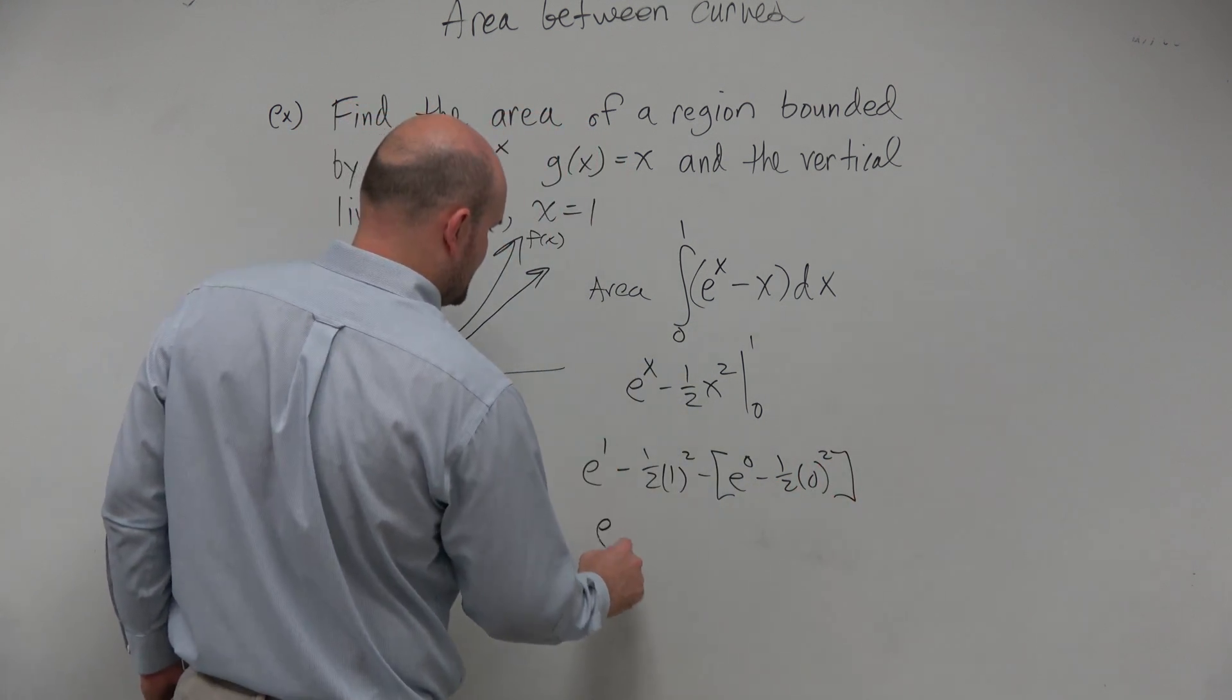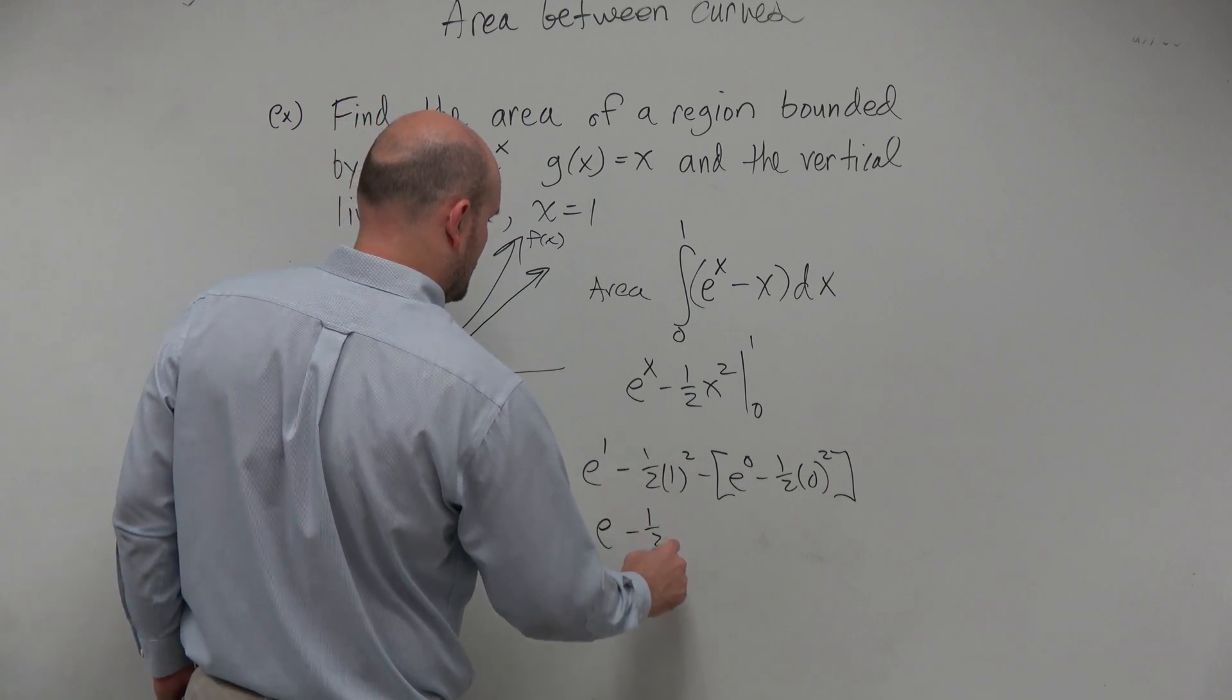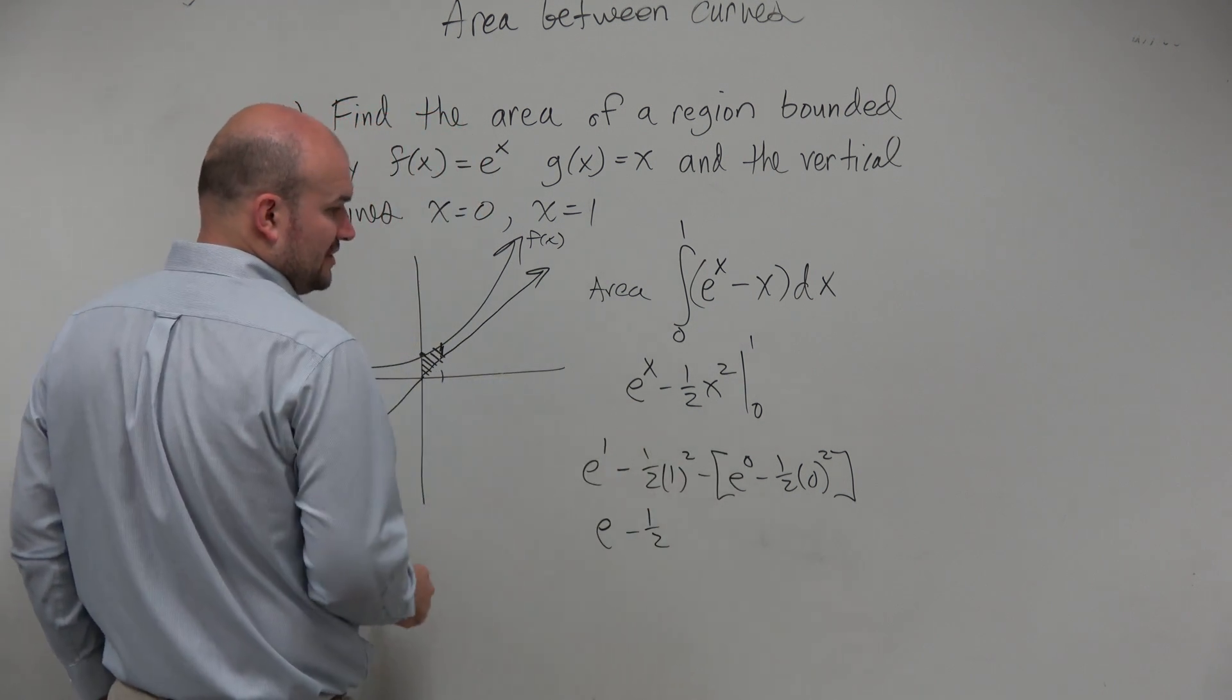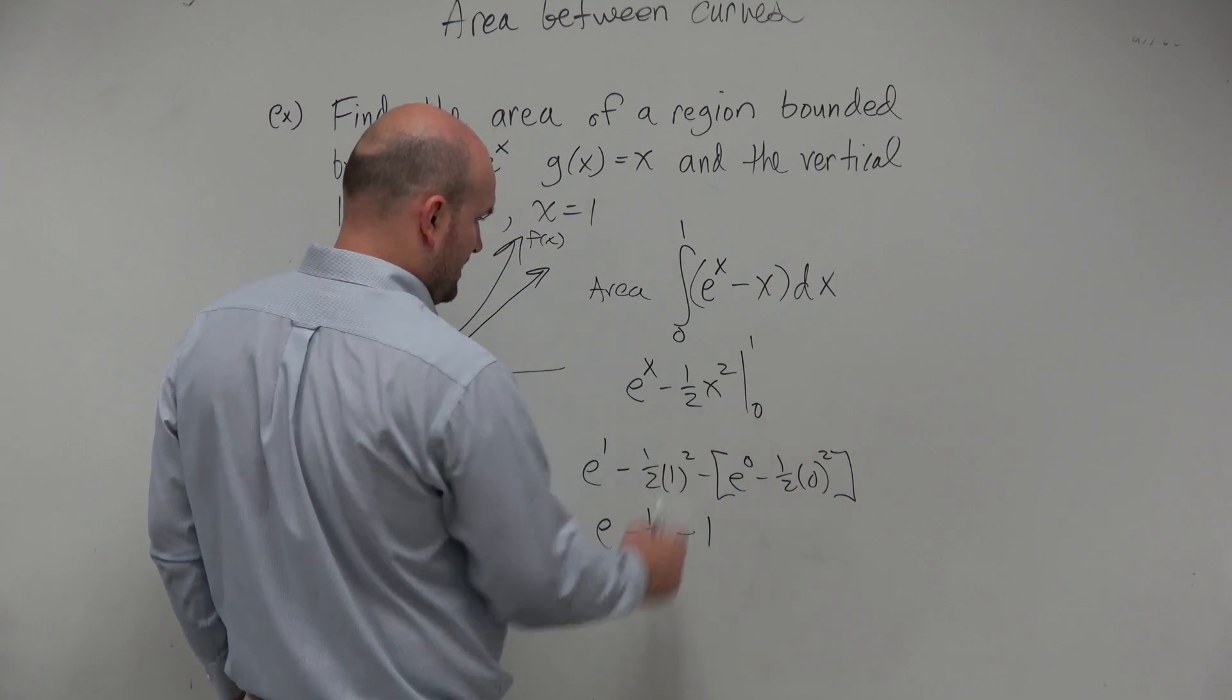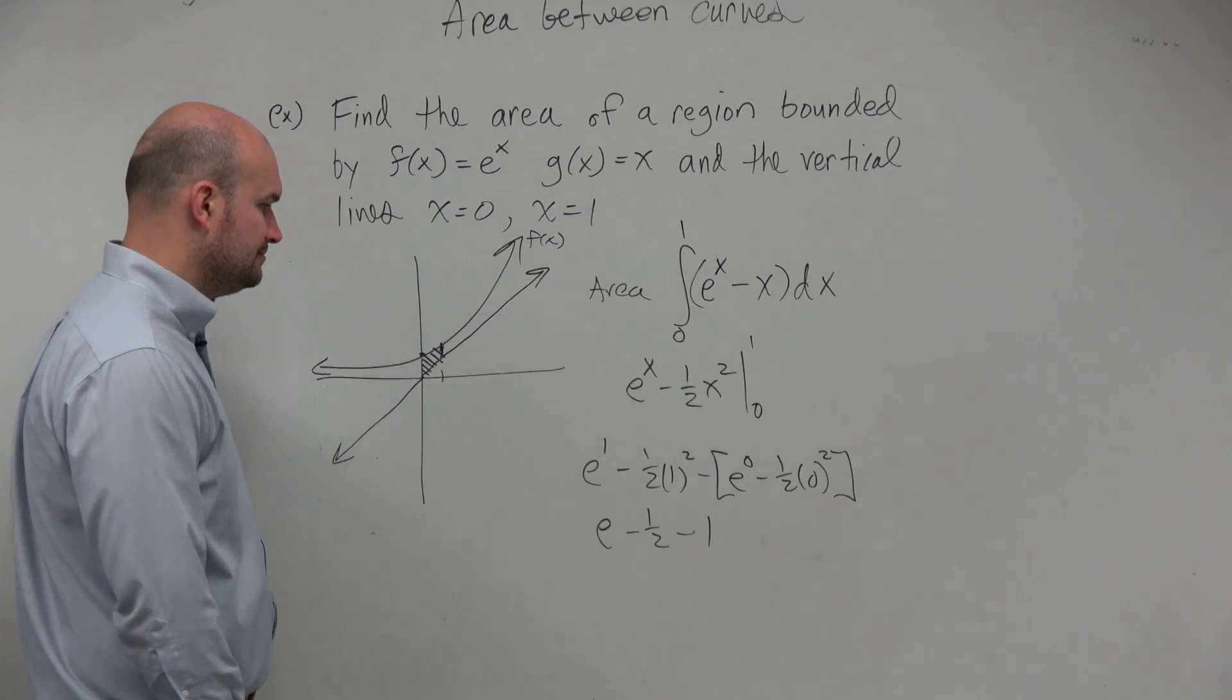Well, e to the 1 is just e. That becomes minus 1/2. e to the 0 is going to be 1. So that's just going to be minus 1. And then that obviously goes to 0.